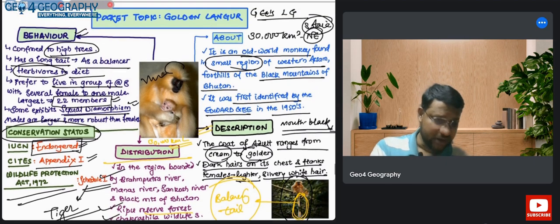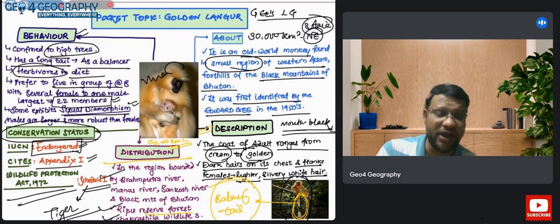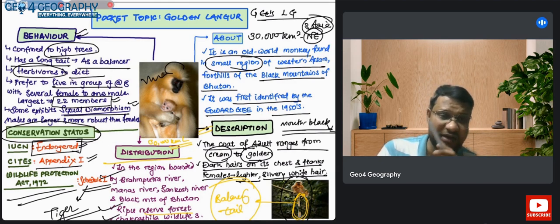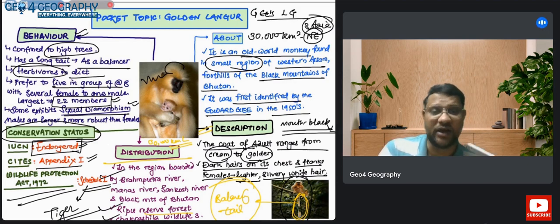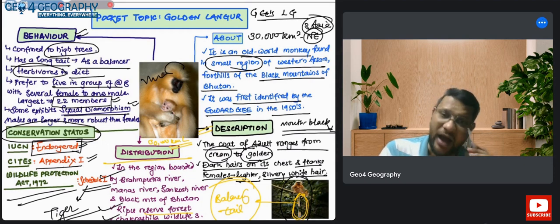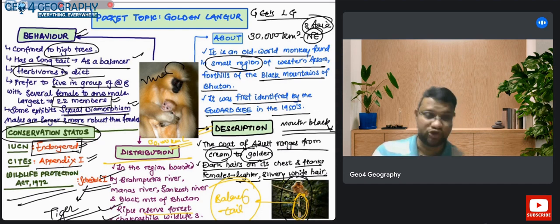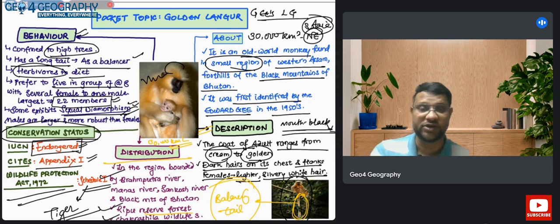So this is the description about the environmental species Golden Langur, also known as Gee's Golden Langur. An old world monkey in the region of western Assam - Brahmaputra, Manas, Ripu River, Black Mountains of Bhutan. It has golden and cream color hair throughout the body, mouth is black, females have lighter silvery white hair. Conservation status: endangered, Schedule I in Wildlife Protection Act. Behavior: high trees, herbivore, long tail as balancer, lives in flocks, exhibits sexual dimorphism.